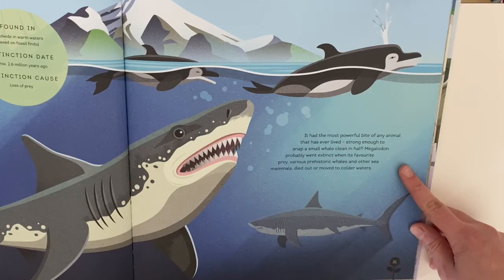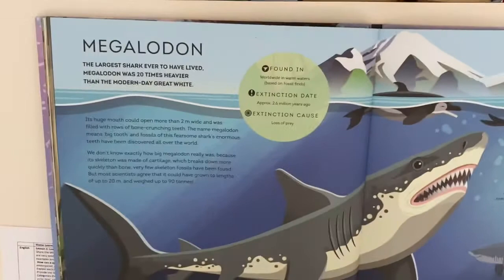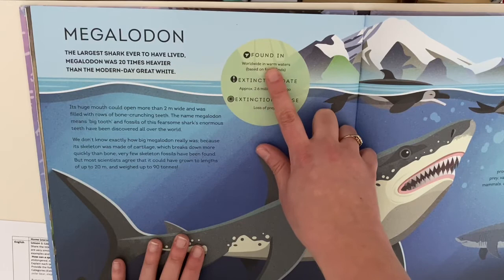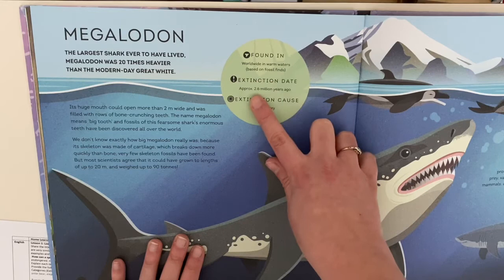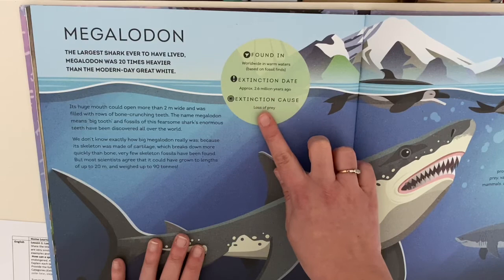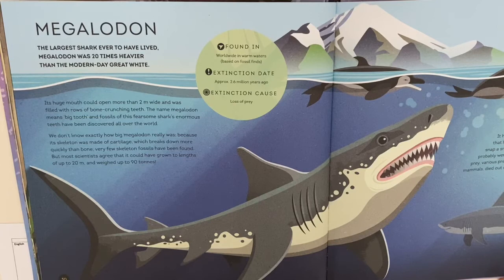Megalodon probably went extinct when its favorite prey — various prehistoric whales and other sea mammals — died out or moved to colder waters. Looking at the facts bubble: found worldwide in warm waters based on fossil finds; extinction date 2.6 million years ago; and the extinction cause was loss of prey, so it didn't have anything else to eat.